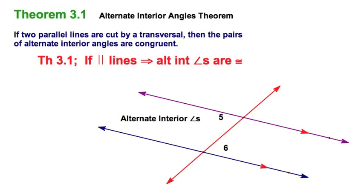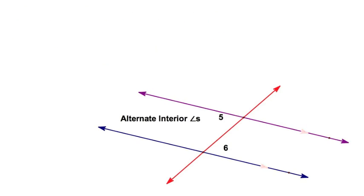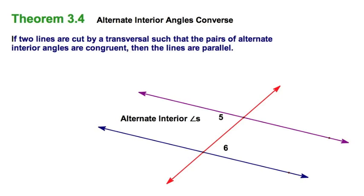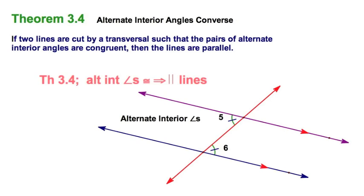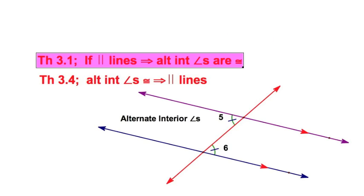Let's clean this up and try it in reverse. The alternate interior angle converse — Theorem 3.4 — states: if the blue and purple lines are cut by the red transversal such that angles five and six, or the other pair, are congruent, then it follows that these lines are parallel. If alternate interior angles are congruent, then parallel lines.